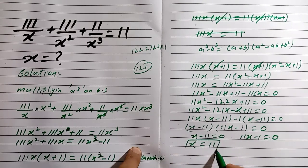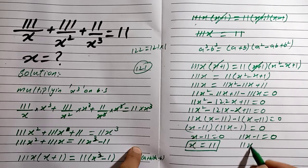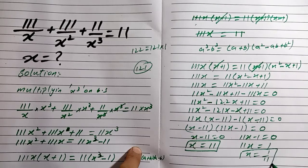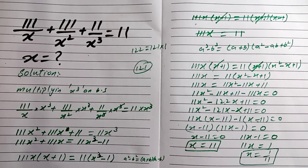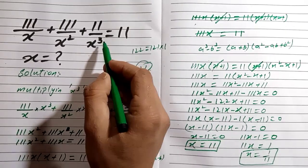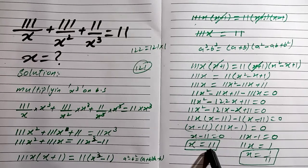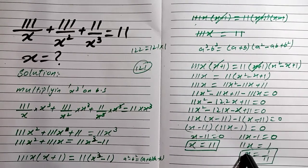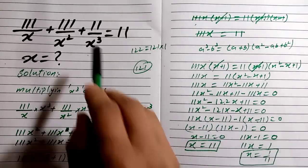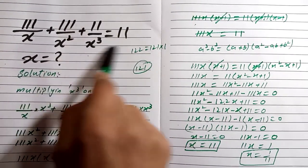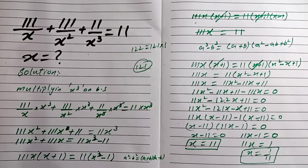From x minus 11 equals zero we get x equals 11, and from 11x minus 1 equals zero we get x equals 1/11. So we have two values of X. To verify these answers are correct, you can substitute both values back into the original equation and the left hand side will equal the right hand side.